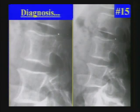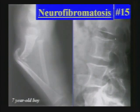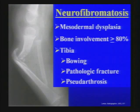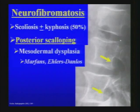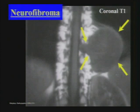Next case — neurofibromatosis. Here is an old image of the same patient as a seven-year-old boy. Neurofibromatosis is considered a mesodermal dysplasia involving bone in more than 80% of cases. When it affects the tibia, there is often early bowing, which may subsequently lead to a pathologic fracture that doesn't heal, resulting in pseudoarthrosis — considered characteristic. Spinal findings include posterior scalloping. In the differential for posterior vertebral body scalloping: other mesodermal dysplasias, dural ectasia, and a mass lesion. A neurofibroma can extend into the perivertebral soft tissue.